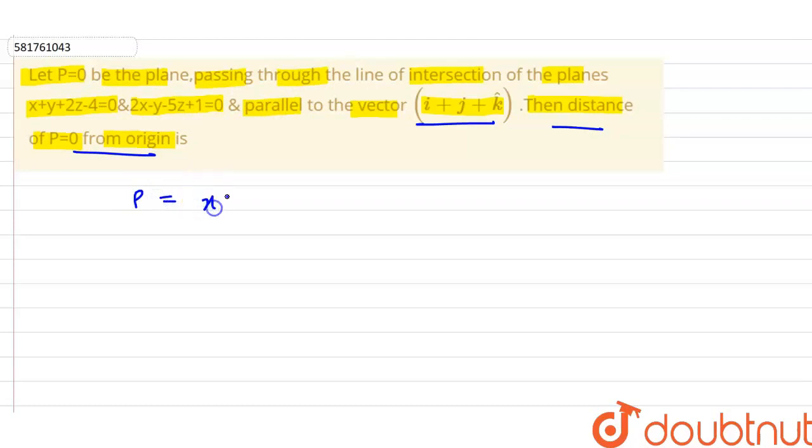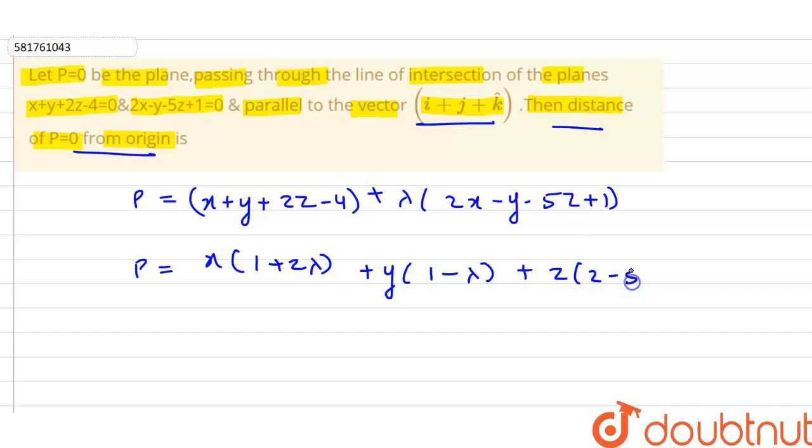The plane equation to be given is x plus y plus 2z minus 4 plus lambda times 2x minus y minus 5z plus 1. We will get x into 1 plus 2 lambda plus y into 1 minus lambda plus z into 2 minus 5 lambda minus 4 plus lambda.